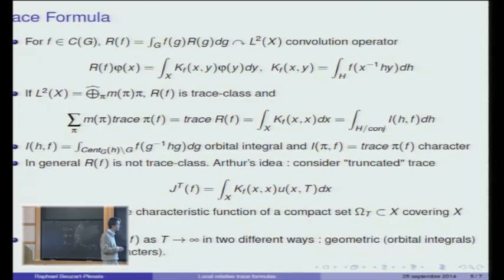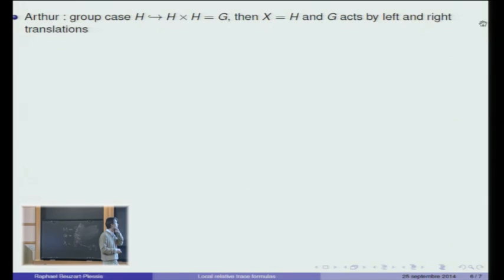Arthur carried out this program for what is called the group case — where G is the product of H with itself, and H embeds in G by the diagonal embedding. In this case, X is simply the group H, and the action of G on X is given by left and right translations — left for the first factor and right for the second factor.